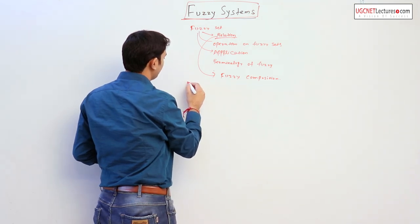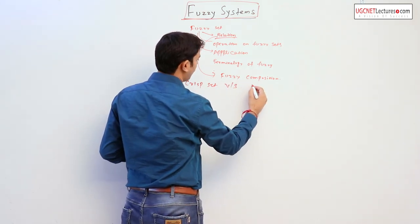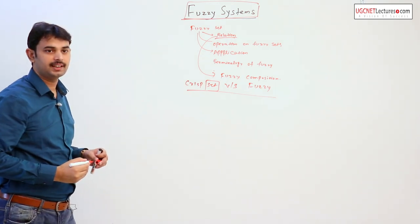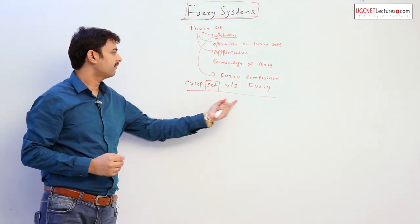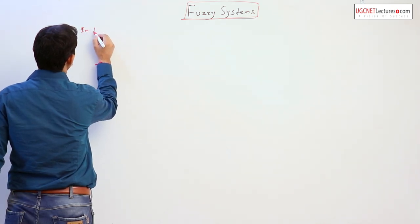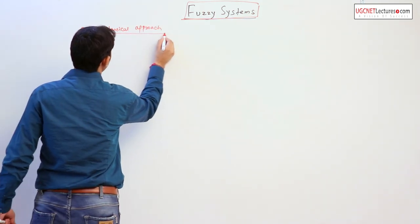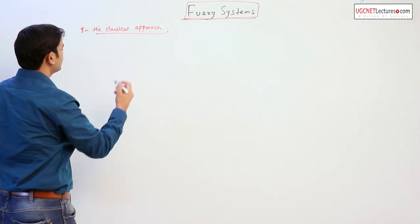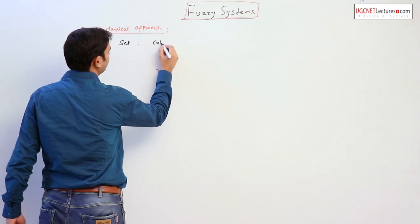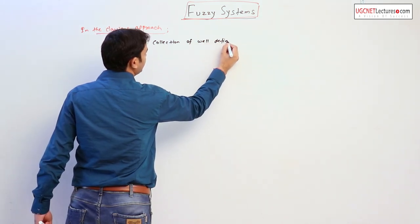The first topic is how a Fuzzy set differs from a crisp set or general set, and why Fuzzy is necessary in real cases. So, first of all, why is a Fuzzy set necessary? Actually, in the classical theory, in the classical approach, a set is defined as a collection of well-defined objects or distinct objects.